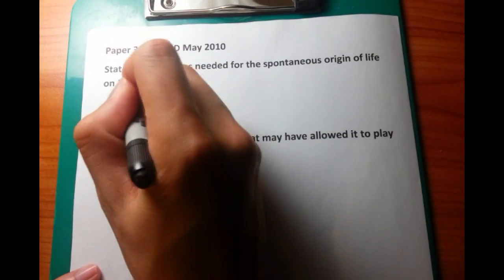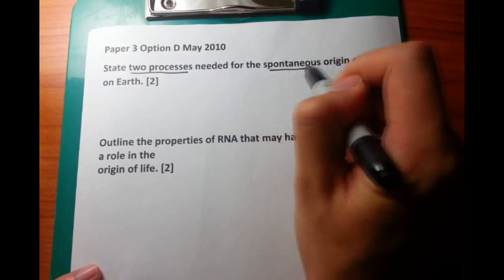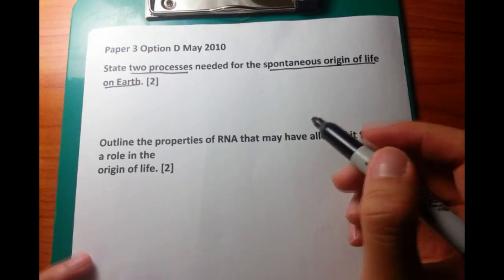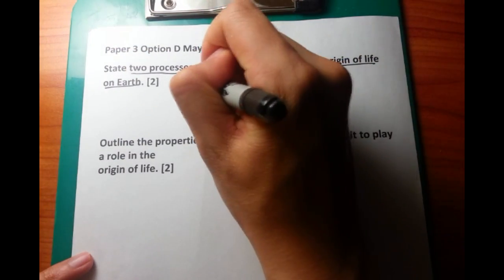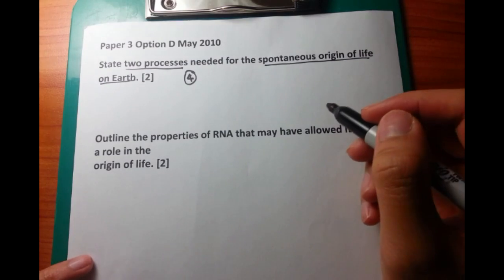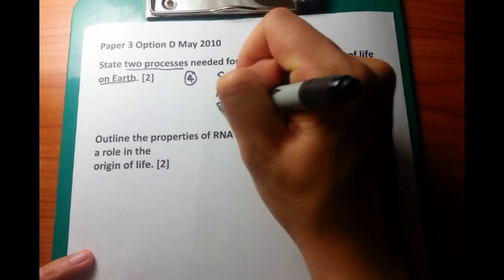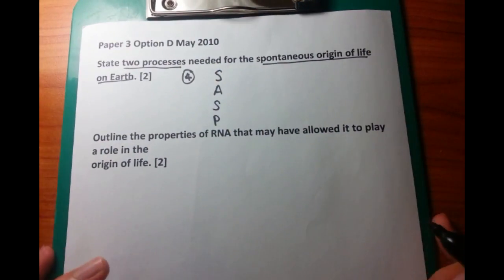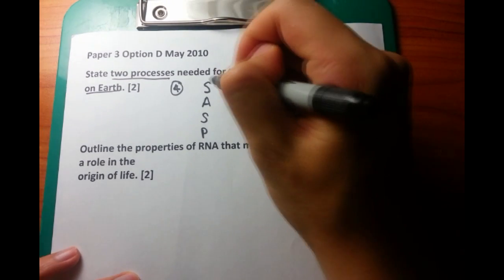So for this options paper we're going to go through option D. The first question is state two processes needed for the spontaneous origin of life on Earth. From the syllabus there are four main points that you can talk about, but in this case you only need to talk about two.